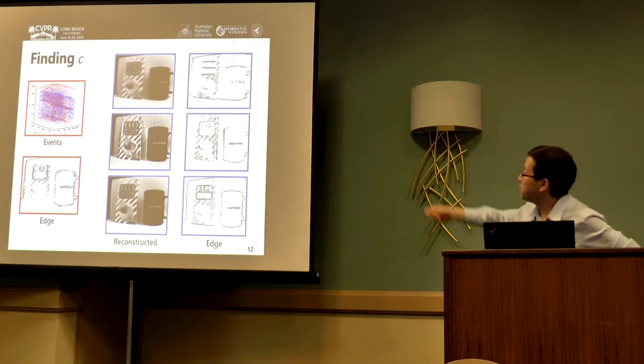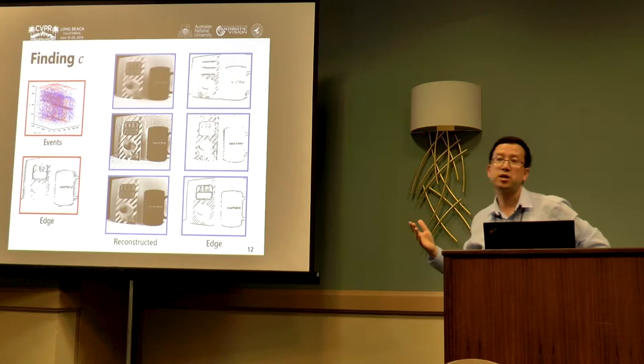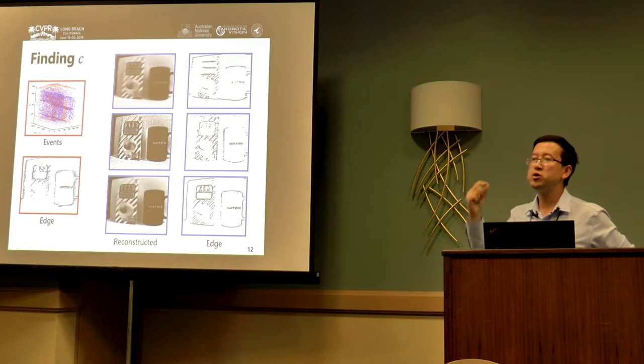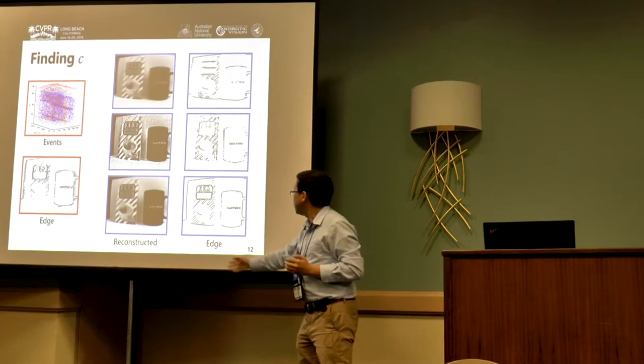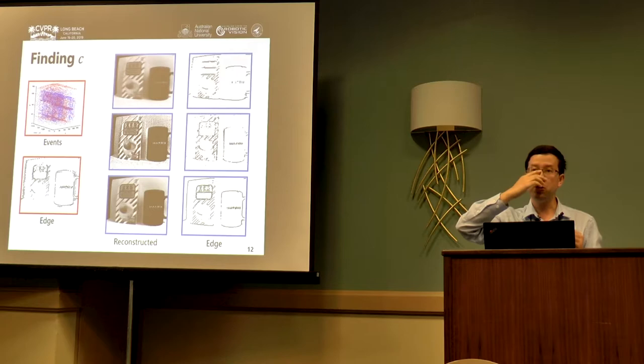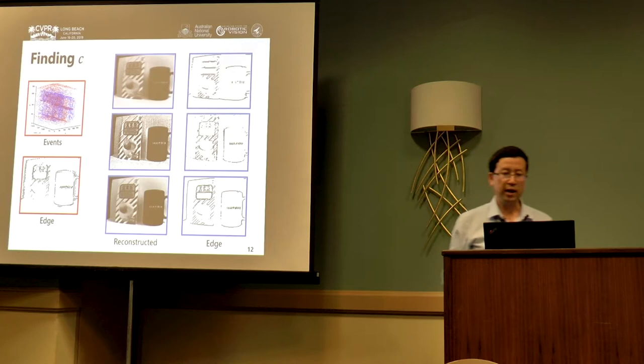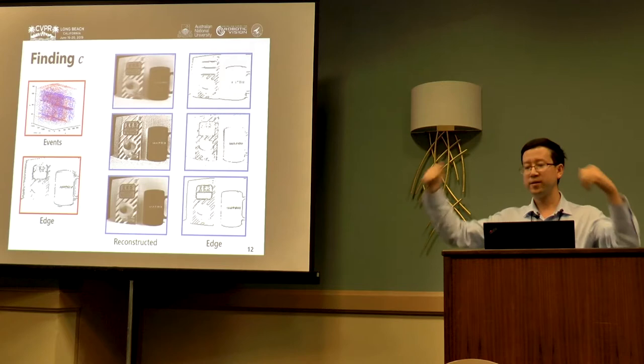Our idea is that with different C, with different thresholds, you could have different re-extracted images. Some could be slightly blurred and some could be overshot. We show some principled way to get the best optimization. The idea is we compare the edge integrated from the event data and the edge of the re-extracted image.